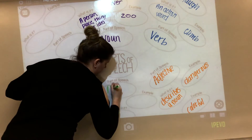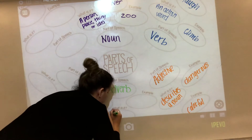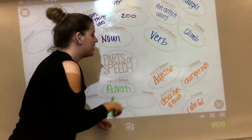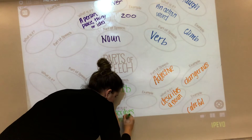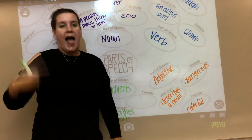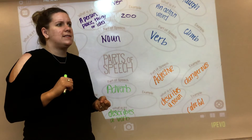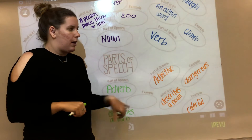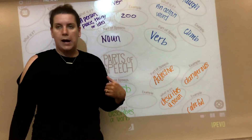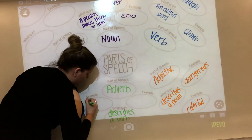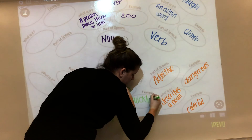Next we're going to talk about adverbs. An adverb describes a verb — just like an adjective describes a noun, an adverb describes a verb. These are the ones that sometimes end in -ly, so they tell you how somebody did something: did they do it quickly, slowly, loudly? Did they kick the ball slowly or quickly? Did they run slowly or quickly? Did they laugh loudly or quietly? Those types of words are all adverbs. Our examples are going to be loudly and quickly.